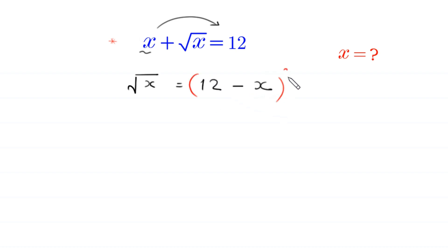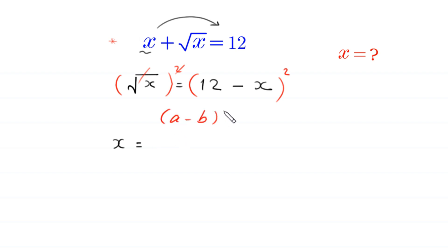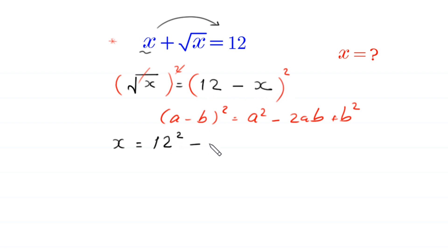We take the square of both sides. This square will cancel with this square root, and at the left hand side we are left with x equal to. By using the algebraic identity a minus b whole squared equals a squared minus 2ab plus b squared, this 12 minus x whole squared will become 12 squared minus 2 times 12 times x plus x squared.